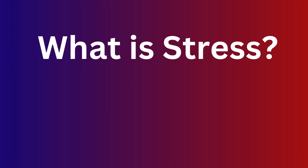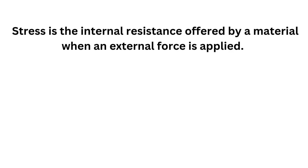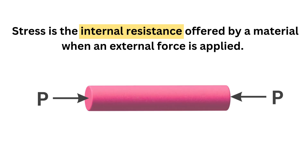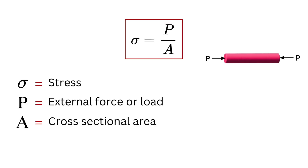What is stress? Stress is the internal resistance offered by a material when an external force is applied. Mathematically, stress is written as sigma equals P divided by A, where sigma is stress, P is external force or load, and A is cross-sectional area.